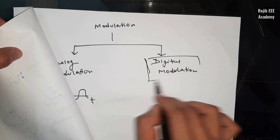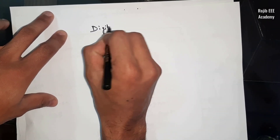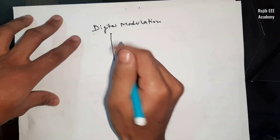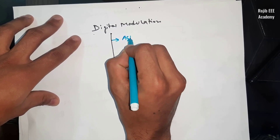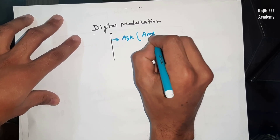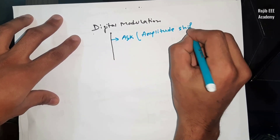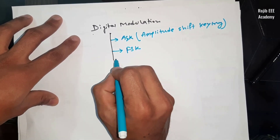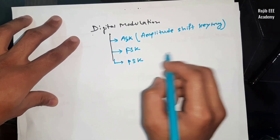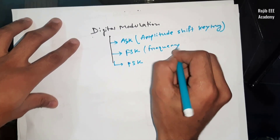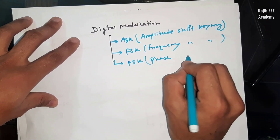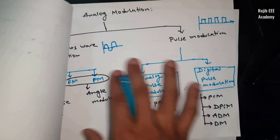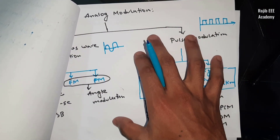Here is Digital Modulation. Digital modulation has three different types, based on Shift Keying: ASK — Amplitude Shift Keying, FSK — Frequency Shift Keying, and PSK — Phase Shift Keying. You can study the details for job exams and semester exams. This is the course overview of the modulation topic from the communication system.